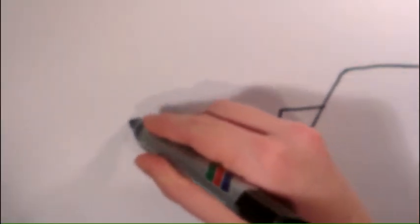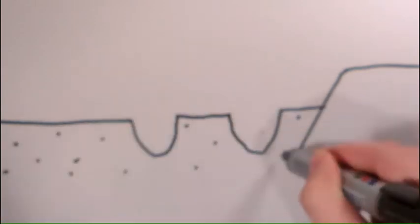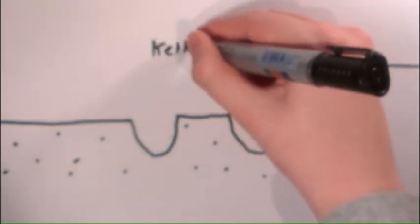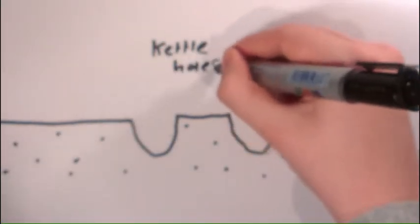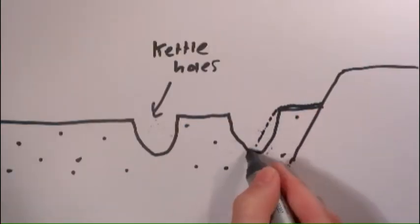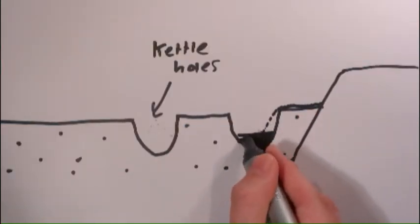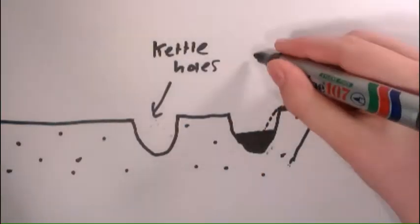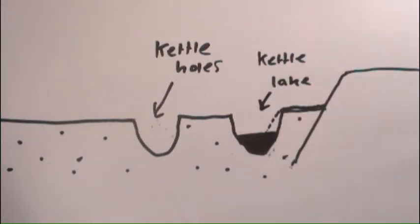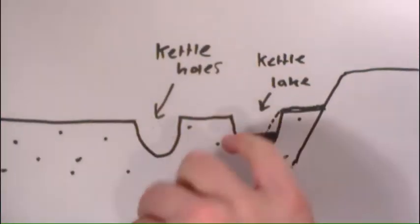This leaves behind holes or depressions that fill with water to become Kettle Holes. If the Kettle is fed by surface or underground streams, it becomes a Kettle Lake. An example of this are the lochs in Scotland.